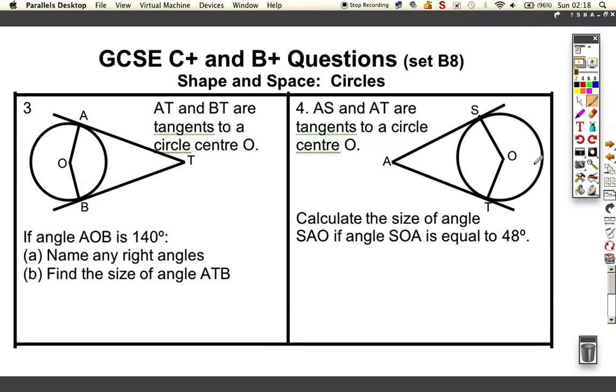AT and BT are both tangents to the circle centre O. Tangents means it's a line that just touches the outside. It also means that this angle and this angle are 90 degrees, because tangents touch radius at 90 degrees. We're told that angle AOB is 140 degrees.